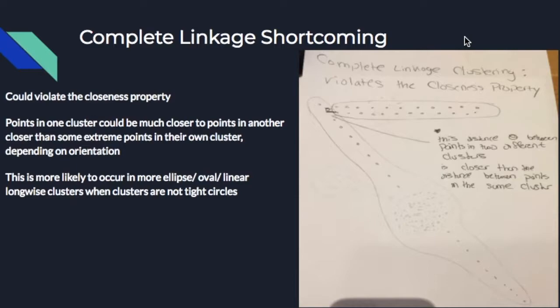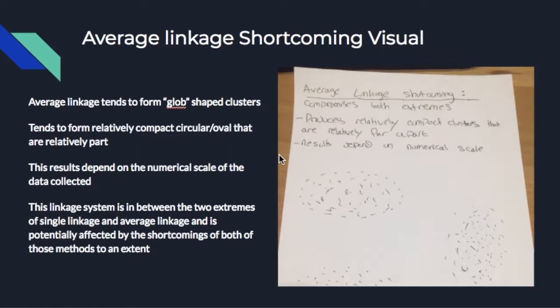Complete linkage is not without its shortcomings. If the data sets are not in tightly packed clusters, it can result in long oval-shaped clusterings. This becomes an issue because the two furthest distances within each cluster can be further apart than the distance between the actual two clusters. As average linkage uses the average distance between clusters, it sometimes takes on the shortcomings of both single linkage and complete linkage, resulting in ambiguous glob-like clusters that don't necessarily tell you enough information.